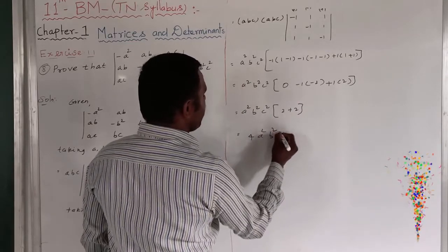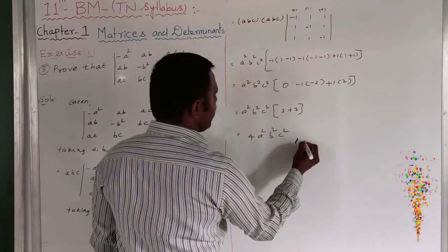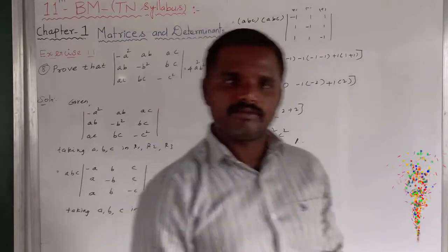4 times a squared, b squared, c squared. Hence it is proved. Thank you.